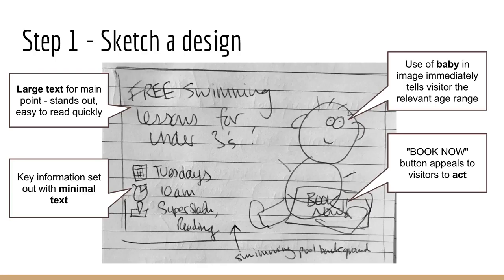Starting top left in the sketch, we've got large text for the main point, which is free swimming lessons for under threes. We want this to stand out and be easy to read quickly. Then just underneath that, we've got key information set out with minimal text. Rather than writing a full sentence, we've just laid out Tuesdays, 10am, and then the location, and toyed with the idea of maybe using some icons as well to help communicate meaning.